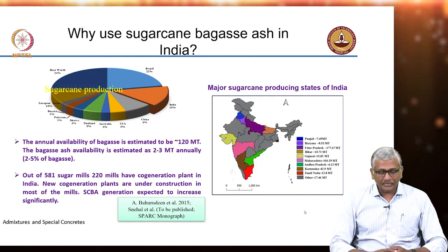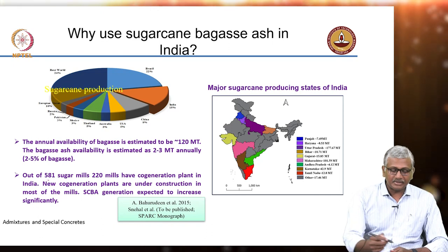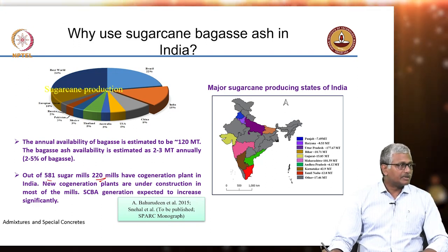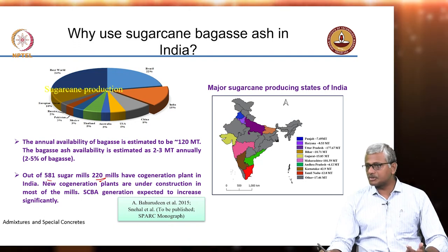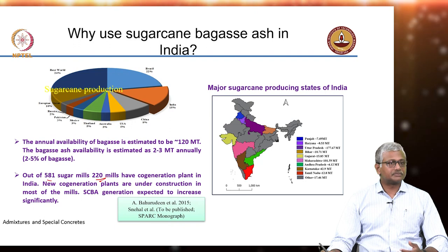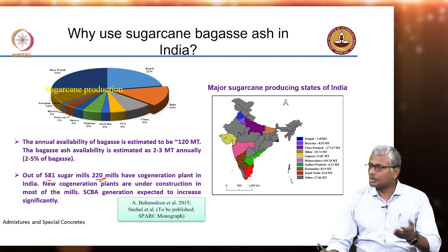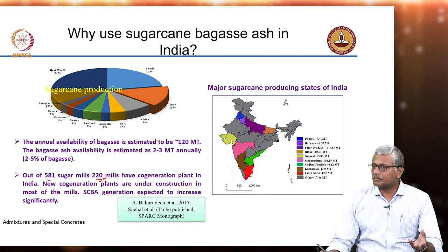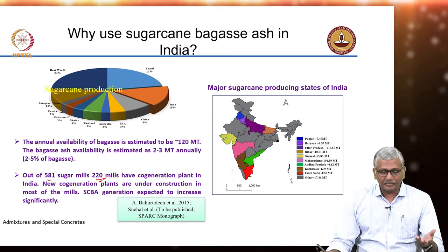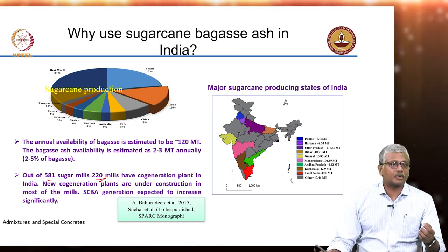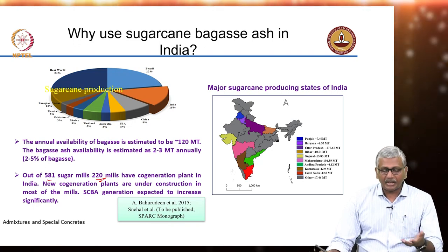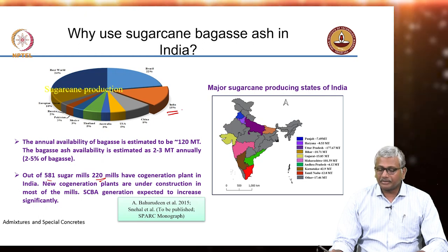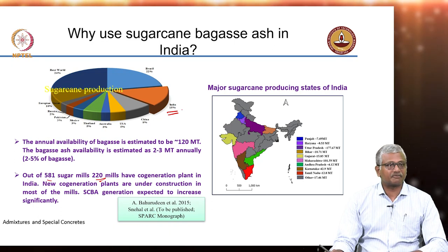In fact, out of the 581 sugar mills present in the country, about 220 have co-generation plants, meaning they can also generate electricity and feed it into the state grid. For new sugar mills, at least in Tamil Nadu, there is a clear directive that they must have a co-generation plant. So we are going to see increasing production levels of bagasse ash, and India produces a significant quantity of sugarcane, second only to Brazil in the world.